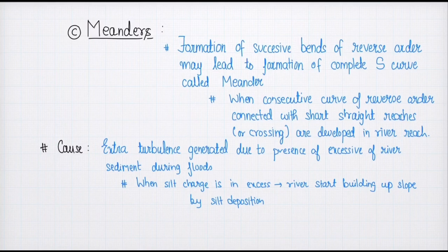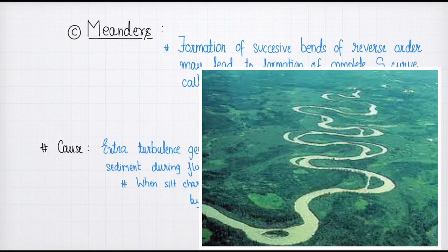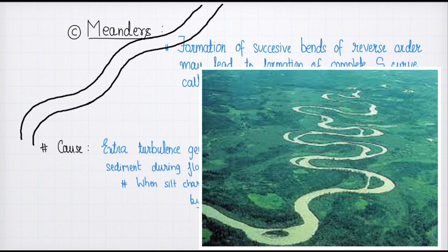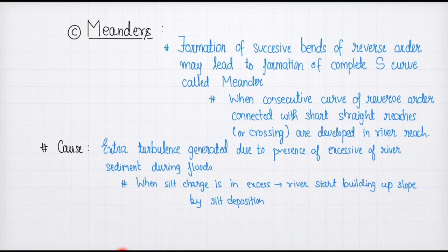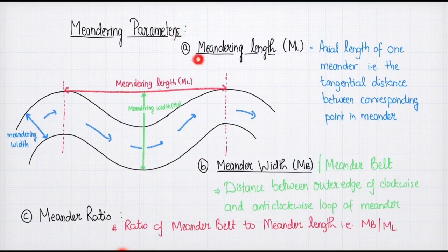Next we have meanders. Meanders are basically interconnected bends — when numerous bends join together, meanders are formed. The formation of successive bends of reverse order leads to the formation of a complete S-curve called a meander. The reason for meander formation is the extra turbulence generated due to the presence of excessive river sediment during floods. We have a meander parameter called meander length, which is the tangential distance between corresponding points in a meander.